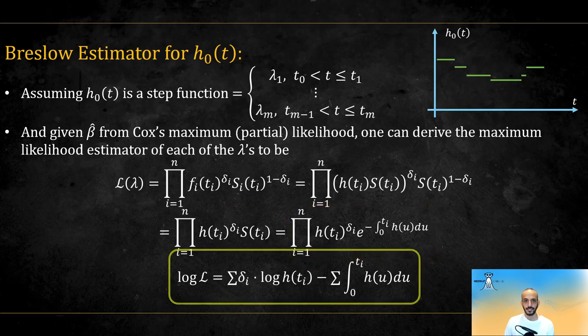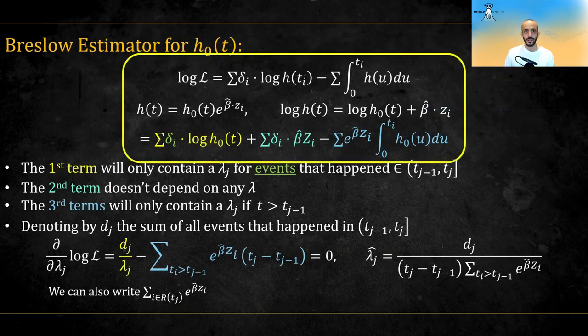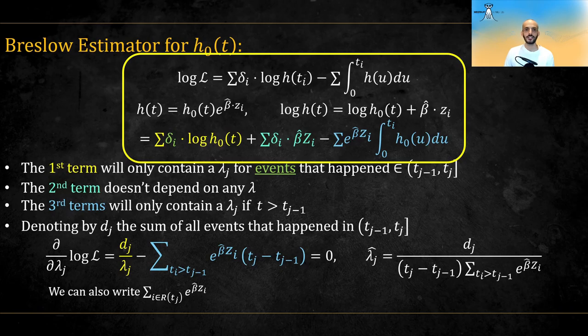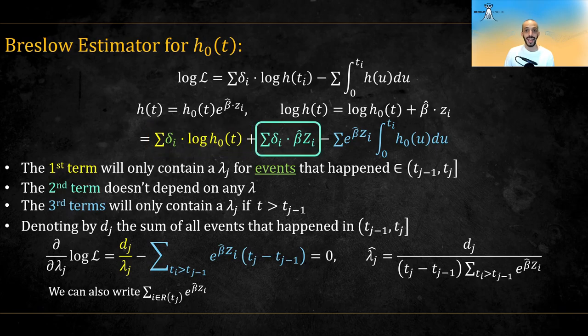Taking the log of this, we get this. Now, plugging in the Cox model assumption, we get the following. We want to take the derivative of this quantity with regards to each lambda. Notice that the first term will only contain a lambda for events that happen in that lambda's timeframe. The second term doesn't depend at all on any lambdas.